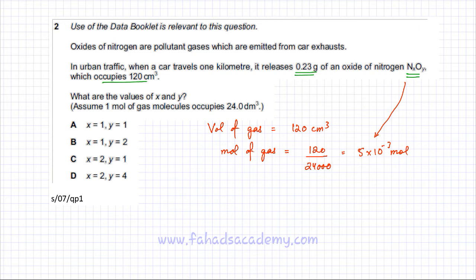I found the moles of this oxide, and I also have the mass of this oxide, which is 0.23 grams. If you have moles and mass, moles equals mass divided by the molar mass, which is the Mr. We need to find the Mr so we can know how many nitrogens and oxygens there are.